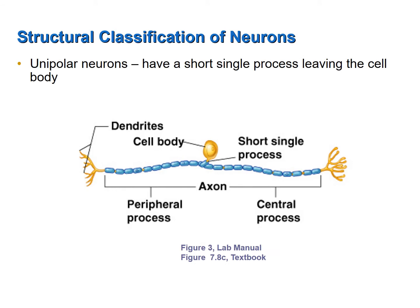A unipolar neuron has one single process, and that would be this one right here. We have one process right there. Now, it is common for students to mistakenly identify this neuron as a bipolar neuron. A lot of times students will focus on what appears to be two processes and call it bipolar. Again, a process is an extension from the cell body. There's only one extension from the cell body — these are branches of that process. So this is unipolar. Don't make the mistake of calling this bipolar.